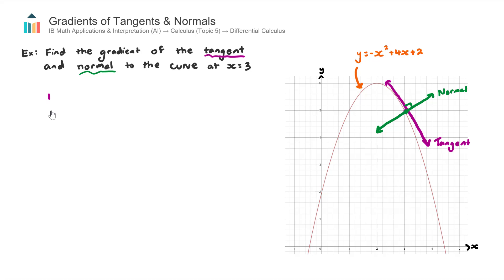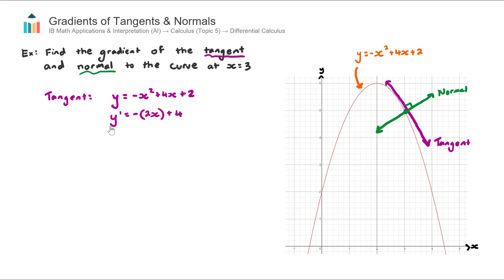Let's start with the tangent. We begin with the equation of the curve: y equals negative x squared plus 4x plus 2. To find the gradient of the tangent, we first need to differentiate our equation. The derivative is y dash — we go and differentiate these three terms, giving us negative 2x plus 4. If you're unsure how that was obtained, I recommend going back and watching video 2, 'Basics of Differentiation.' So y dash equals negative 2x plus 4, and there is our derivative.